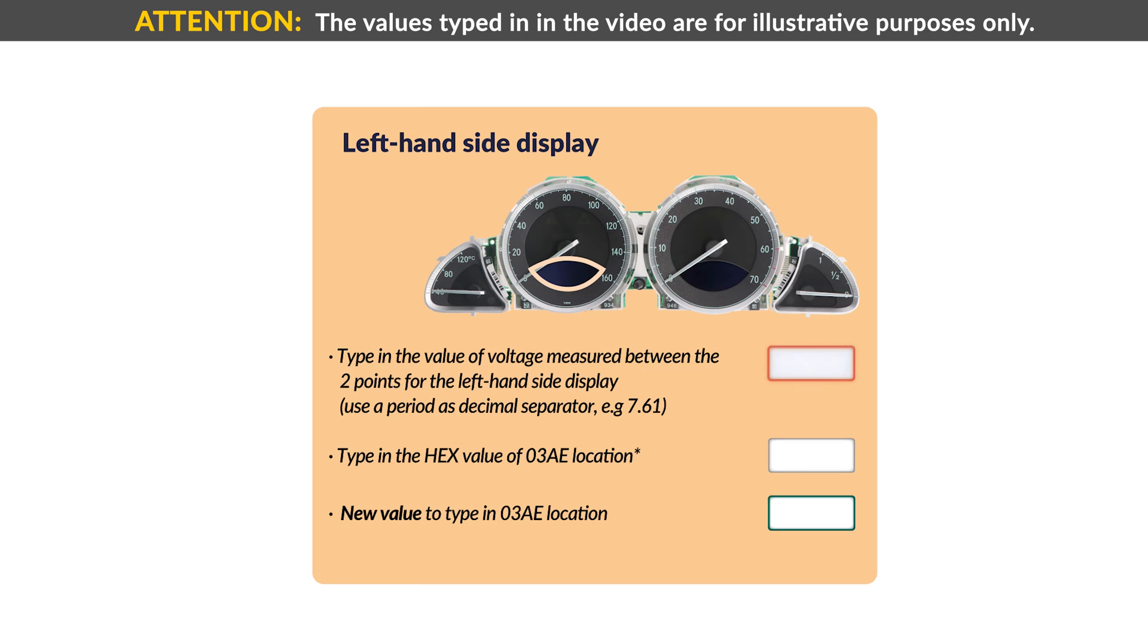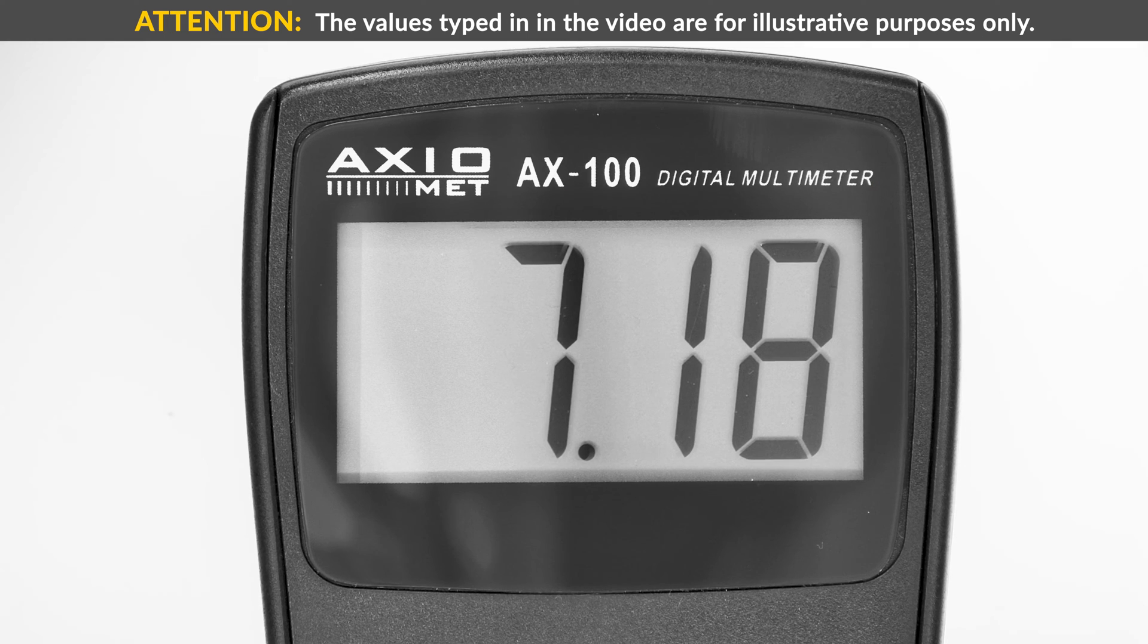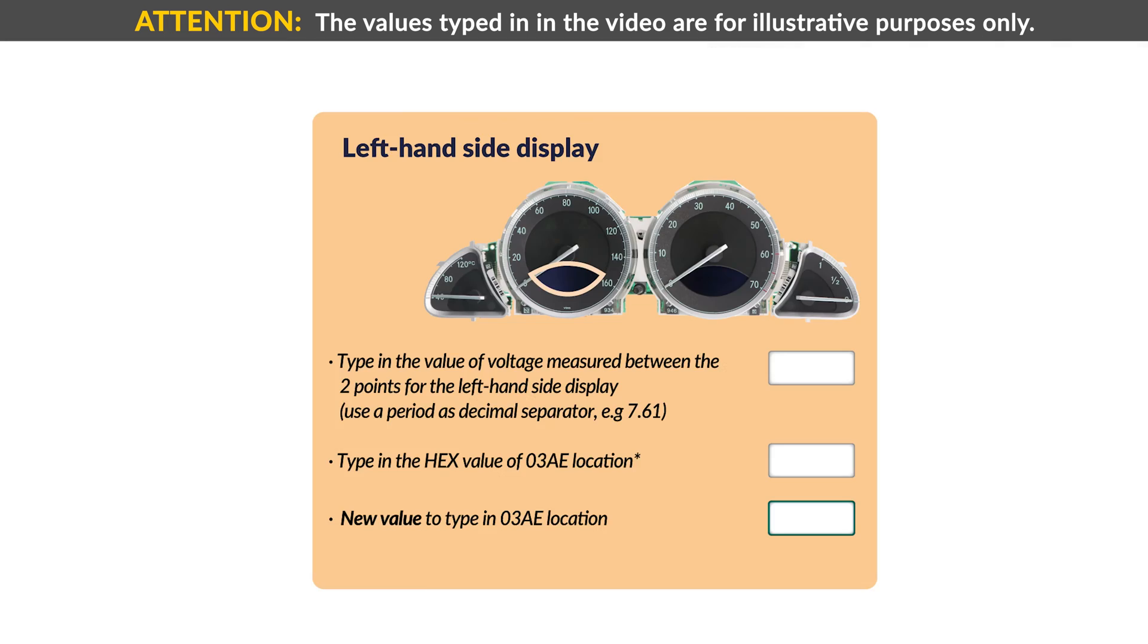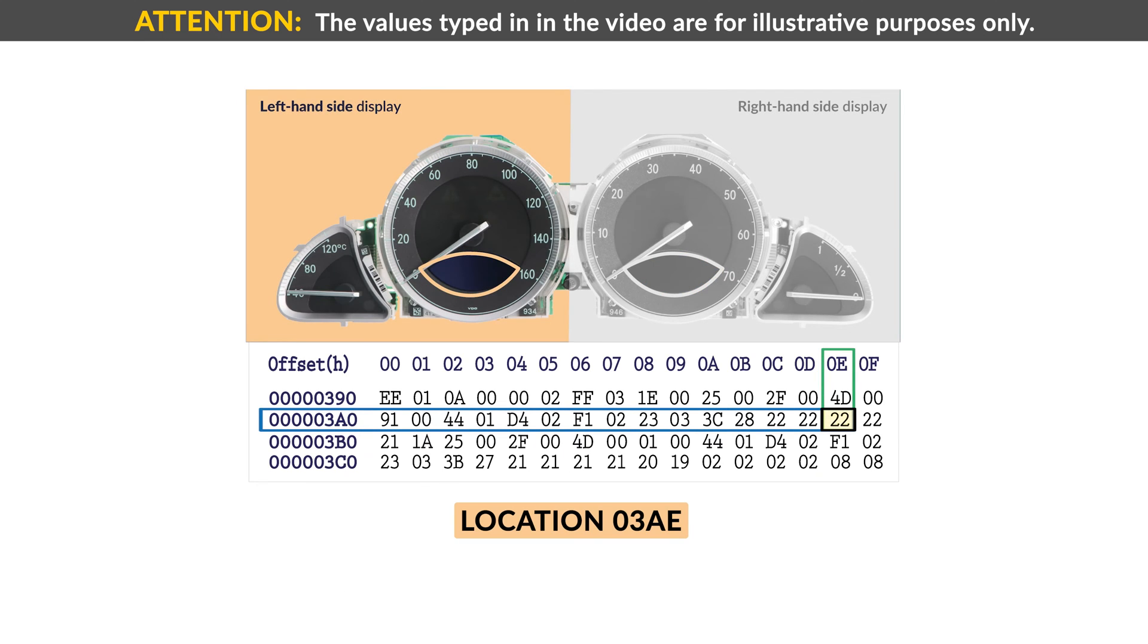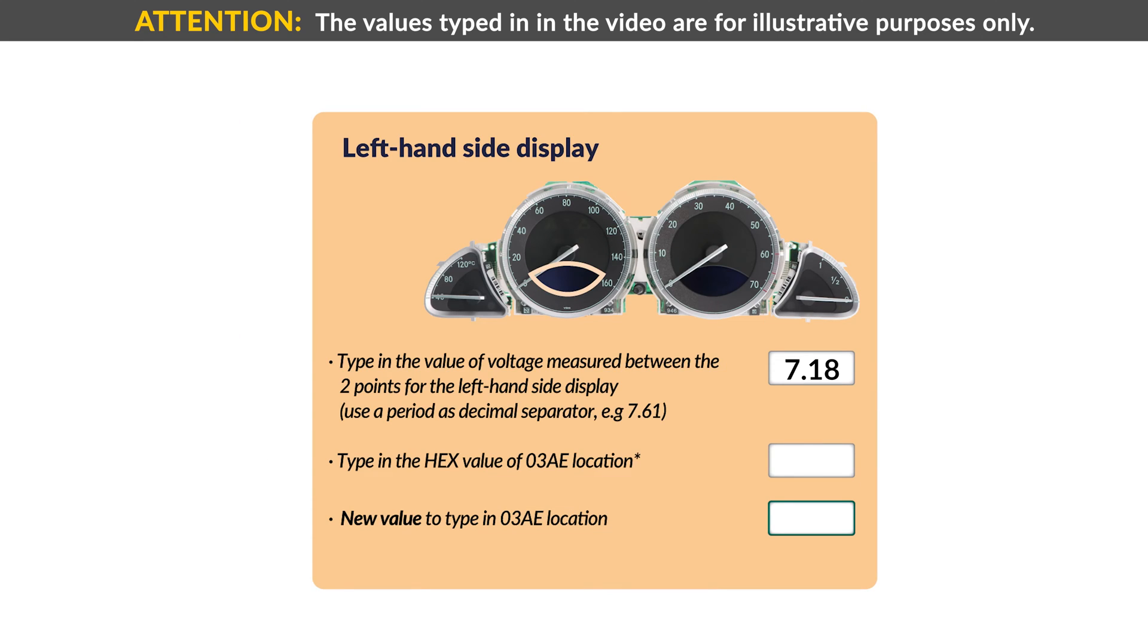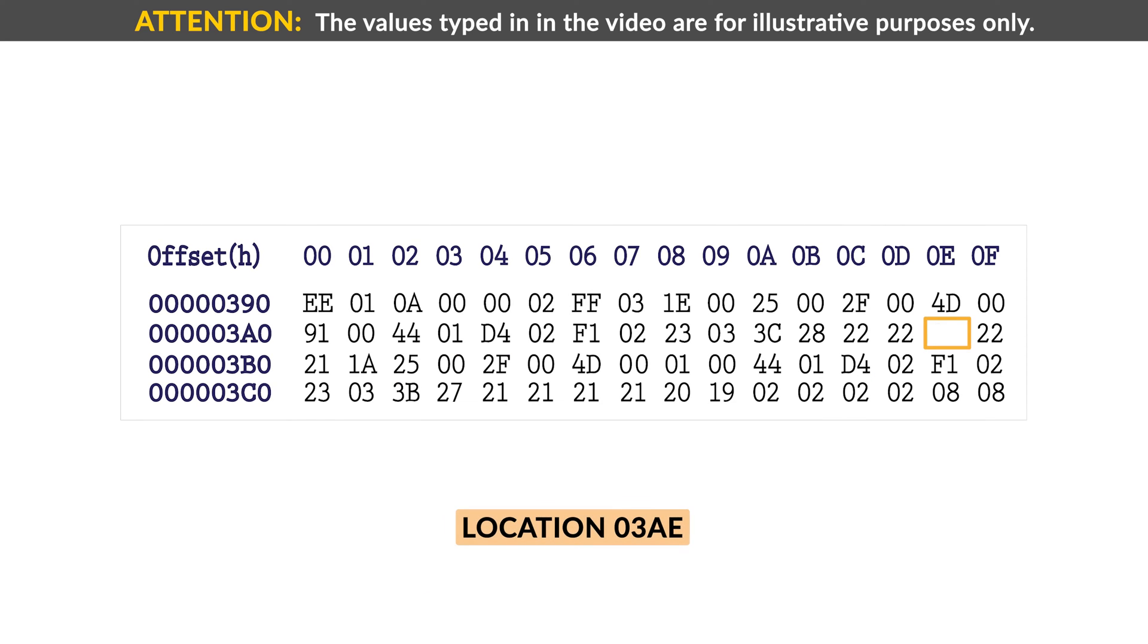Type in, in the first box, the voltage measured before for the left-hand side display. In this case, the voltage was 7.18V. Then, type in the value of the 03AE location in its related box, in this case 22. The tool will automatically calculate the new value, 24, to insert in the location on the EEPROM.